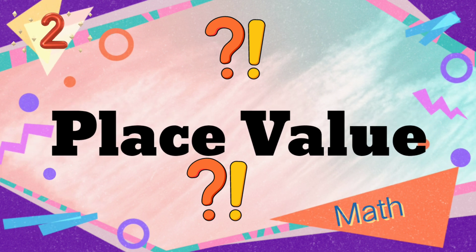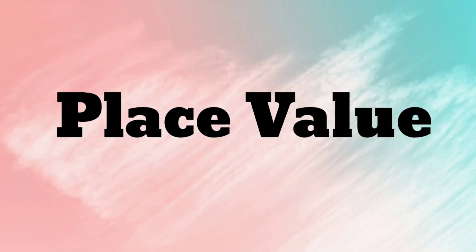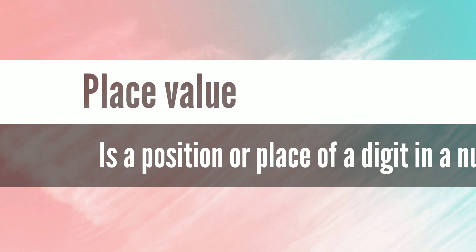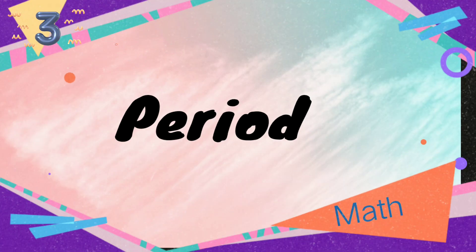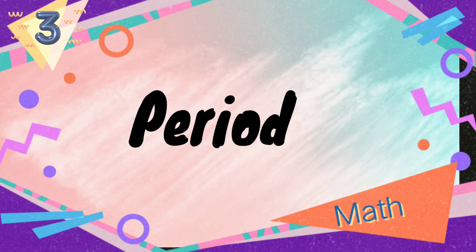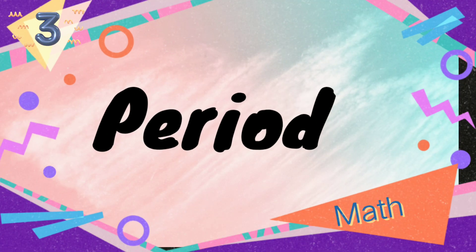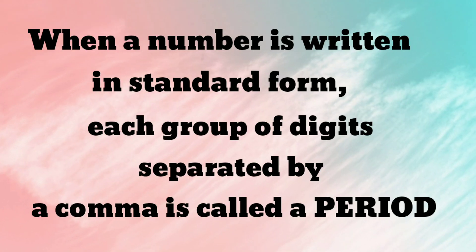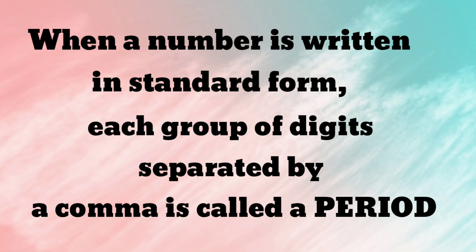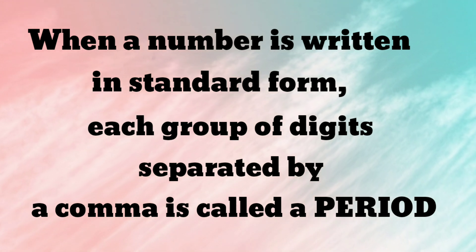Place value refers to the position or place of a digit in a number. We will elaborate this later in our lesson proper. The last word we have is period. This is very different from the period or point that you know in a sentence, because here we will use period to name the group of digits.